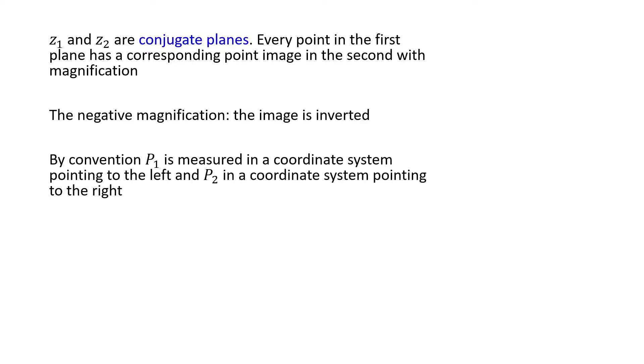The negative sign of the magnification implies that the image is inverted. By convention, P1 is measured in a coordinate system pointing to the left and P2 in a coordinate system pointing to the right.